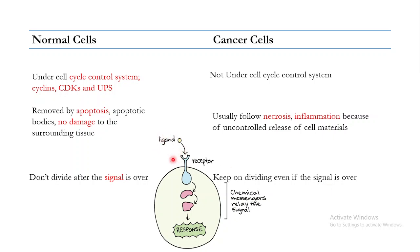When you talk about cancer cells, they keep on dividing even if the signal is over. There may be problems with the receptors, or there are mutations in these receptors, or mutations in the chemical messengers present in the cytoplasm. Once activated, these messengers remain activated for a longer period of time or are activated abnormally, and that abnormal activation leads to abnormal cell division — and that abnormal cell division is essentially cancer.